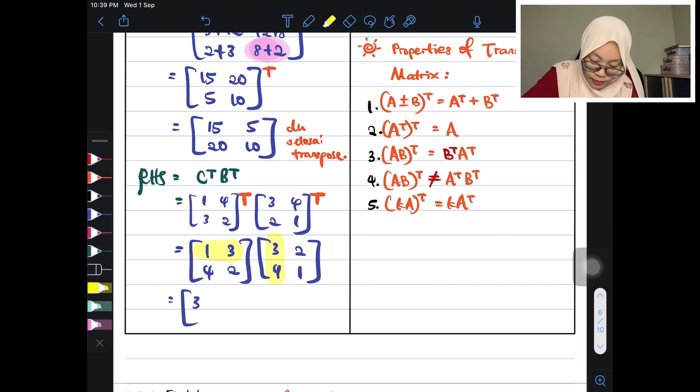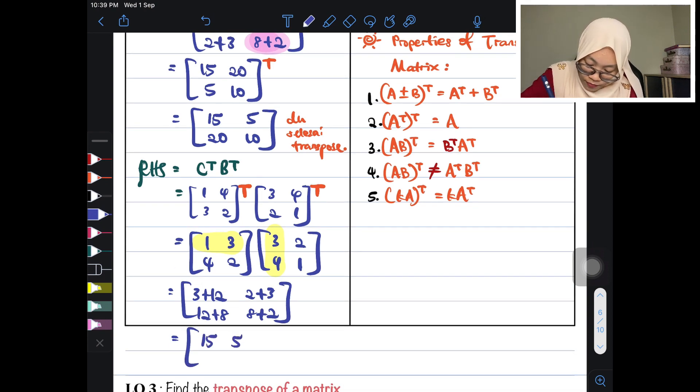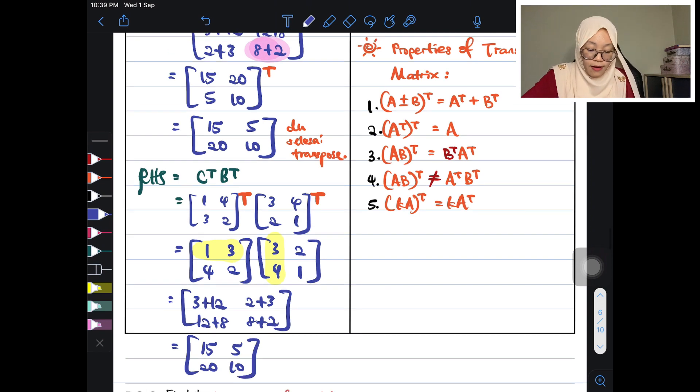Then I transpose it. I will get 1, 4, 3, 2 times 3, 4, 2, 1. And now I would like to solve it. I will get 3 plus 12 is here. 2 plus 3 is here. And here is 12 plus 8. And here is 8 plus 2. So my answer is 15, 5, 20, 10. Wow! Oh my God! This equals the left hand side part. And this equals my right hand side part. They are the same thing. Therefore, since my left hand side equals the right hand side, therefore this property is correct. You have shown it.